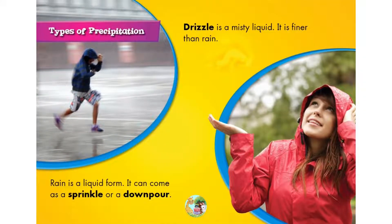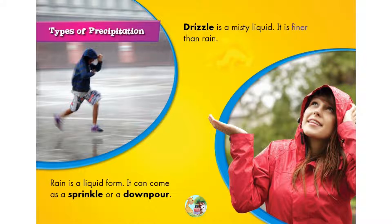Types of precipitation. Rain is a liquid form. It can come as a sprinkle or a downpour. Drizzle is a misty liquid. It is finer than rain.